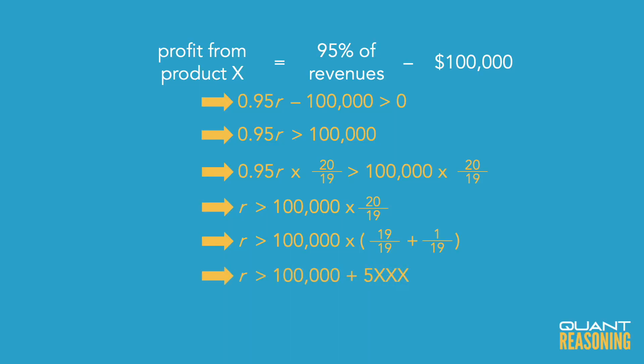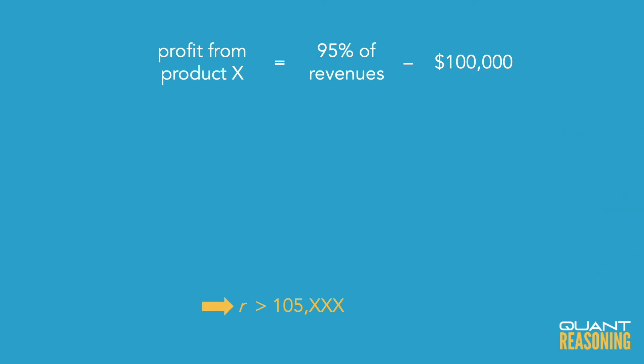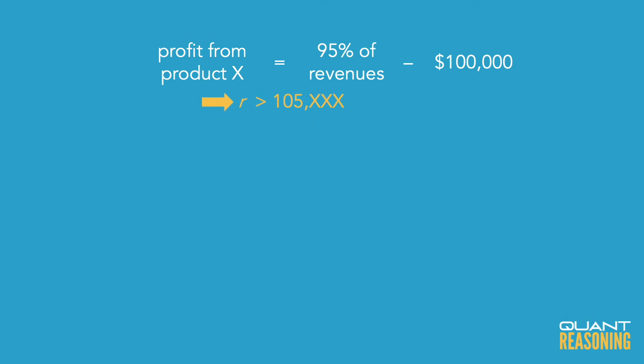So 1 over 19 is just a bit more than $5,000. We can rephrase this free info to say that the total amount of revenues were more than $105,000 — something just a bit more than $105,000.